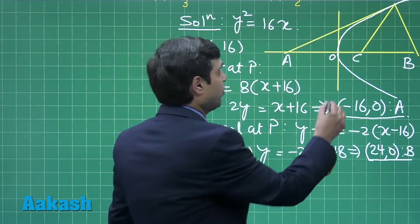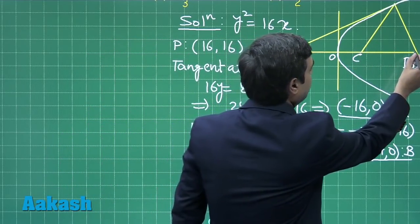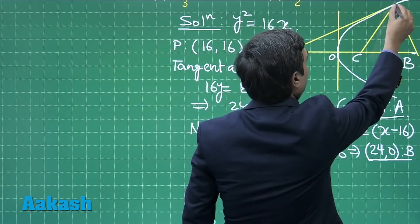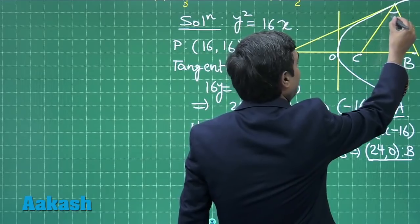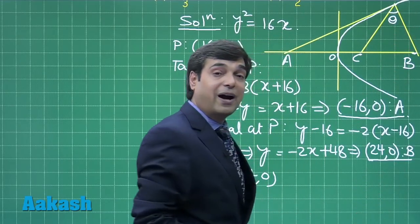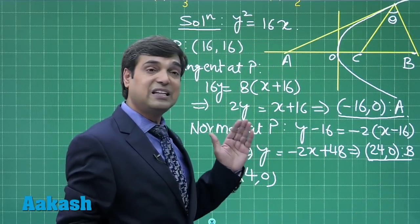We have coordinate for point C, coordinate for point B and coordinate for point A, meaning we can find the angle θ by finding slopes of line PC and PB.